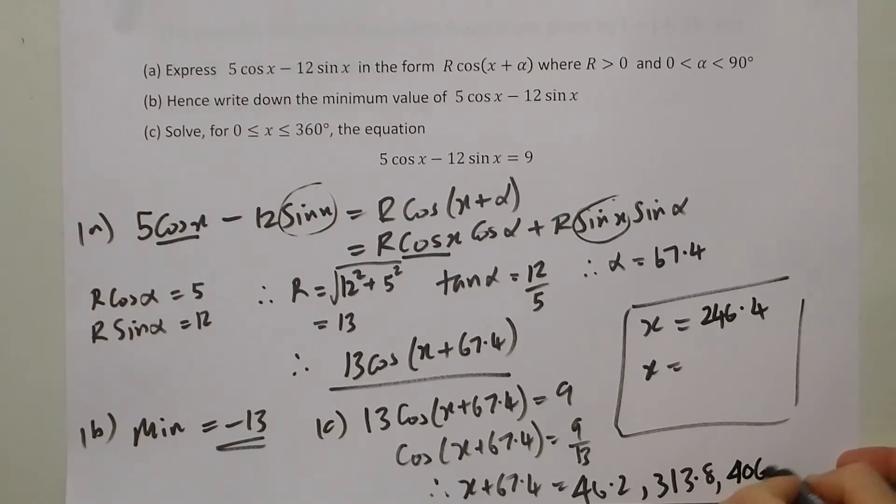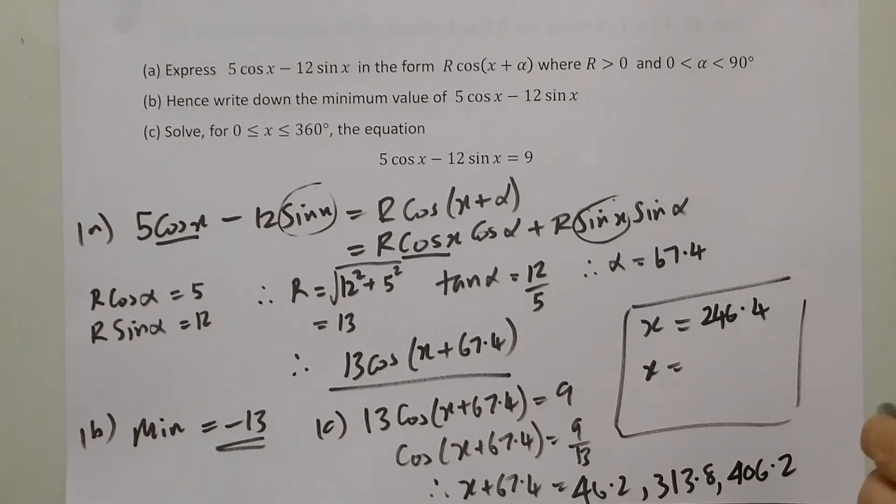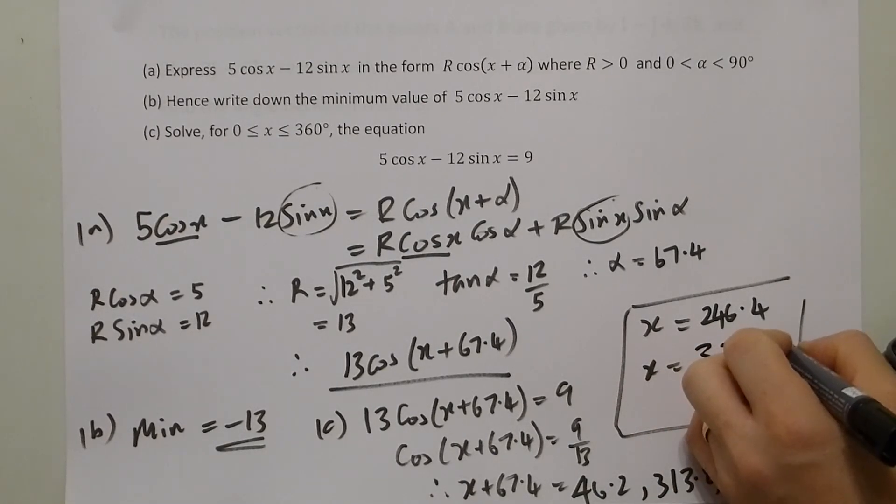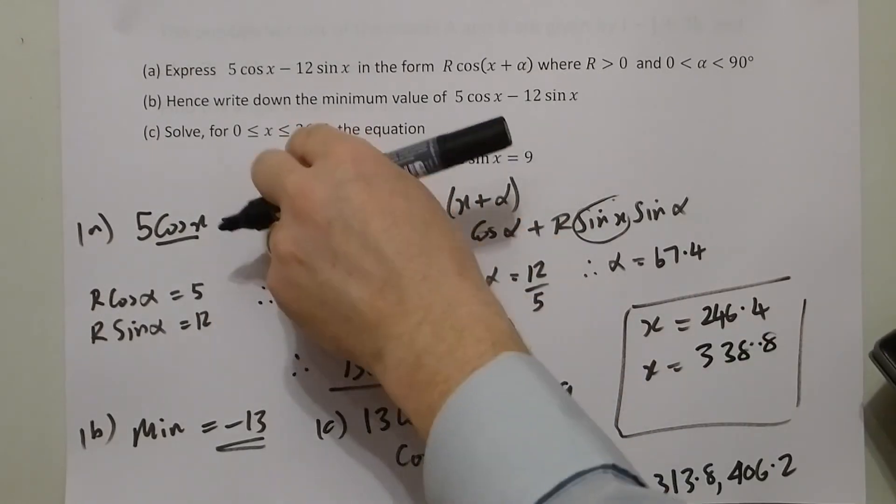Because when I subtract 67.4 from that, 406.2, take the 67.4, would come out with 338.8, which is still in the range.